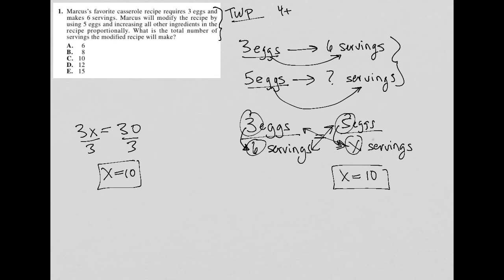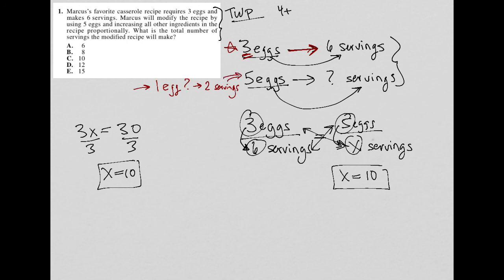Another way to solve it — I'll use a different color here — is to look at the original information and say, if three eggs equals six servings, what is one egg? I like to use this method to bring it down to the simplest unit. If three eggs is six servings, then one egg must be two servings, or two servings per egg. So three eggs leads to six servings, which means every one egg leads to two servings. Applying that to five eggs: if one egg leads to two servings, then five eggs should lead to 10 servings. The number of servings is double the number of eggs, so our answer is 10.